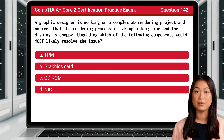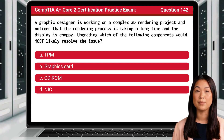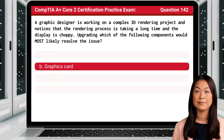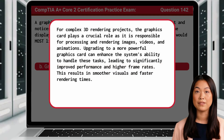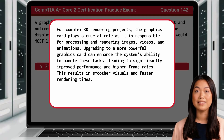Question 142. A graphic designer is working on a complex 3D rendering project and notices that the rendering process is taking a long time and the display is choppy. Upgrading which of the following components would most likely resolve the issue? The answer is B. Graphics card. For complex 3D rendering projects, the graphics card plays a crucial role as it is responsible for processing and rendering images, videos, and animations. Upgrading to a more powerful graphics card can enhance the system's ability to handle these tasks, leading to significantly improved performance and higher frame rates, resulting in smoother visuals and faster rendering times.